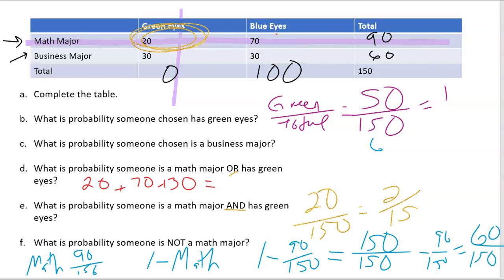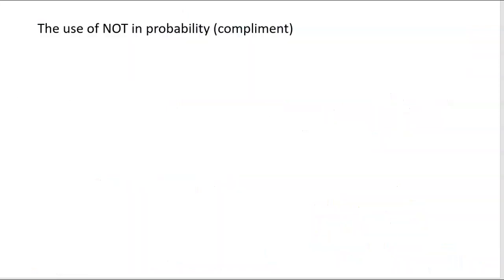And I know you're thinking right now, we could have just looked at the business majors. And yes, that is true. However, you will come up with problems that maybe don't have a simple table or that have a really large table, and it really will be easier to do that subtraction piece. So thinking about not is one minus that.